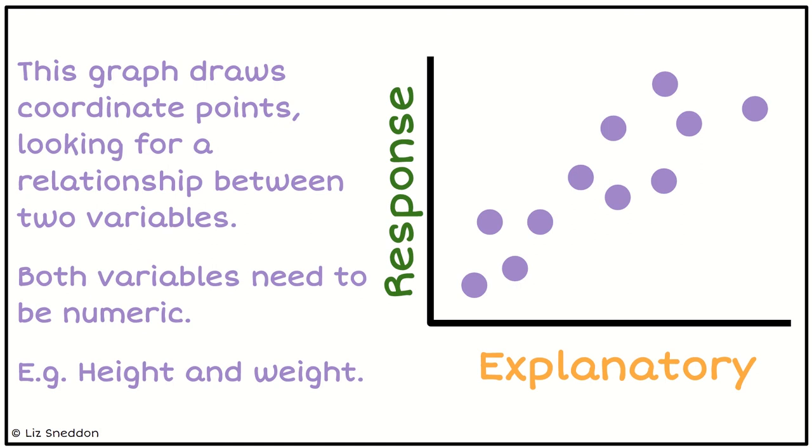We have two axes, our x and y axis. Both of them must be numeric variables, so we've got to have numbers on both axes. We are looking for a relationship between the points, for example like height and weight. I wonder if there's a relationship between them, and we draw the coordinate points.